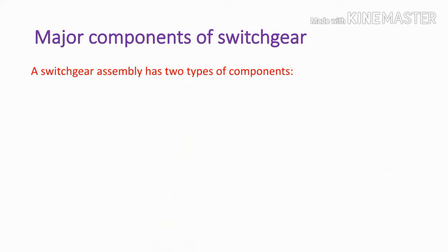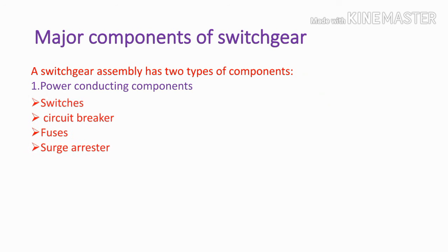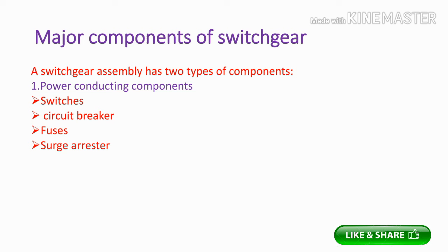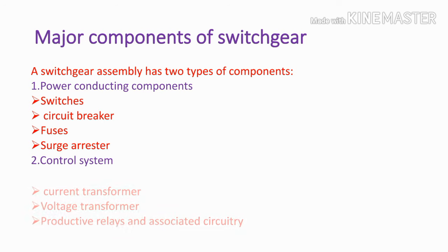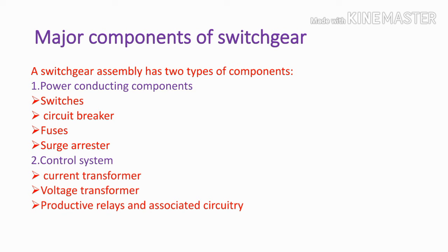There are two types of major components of switchgear. The first is the power conducting components: switches, circuit breaker, fuse, and surge arrestor. These four are power conducting components that carry high voltages. The second type is the control system components: current transformer, voltage transformer, protection relay, and associated circuitry. These control the switchgear.